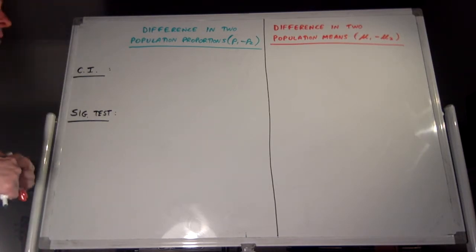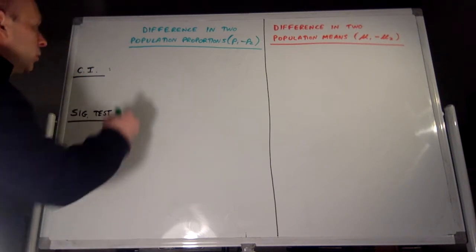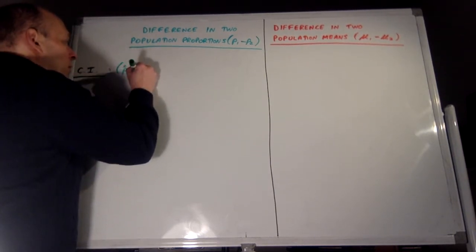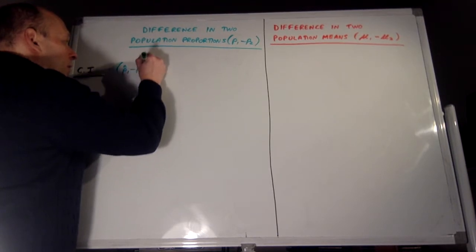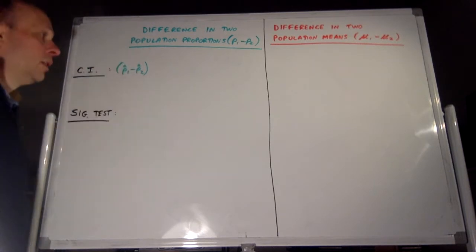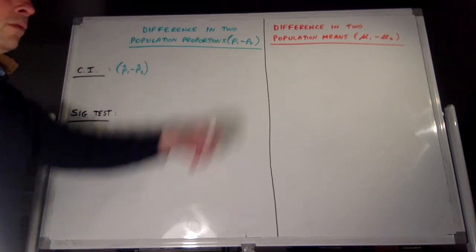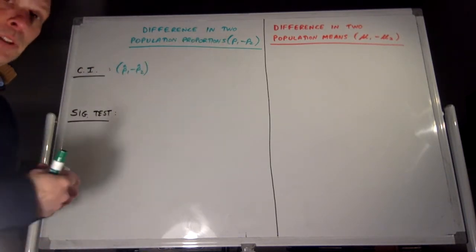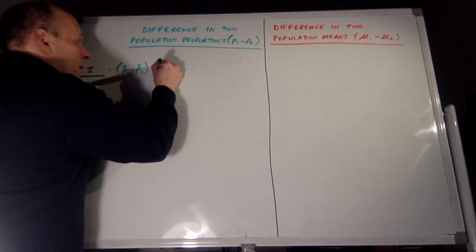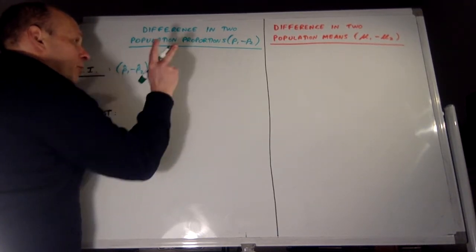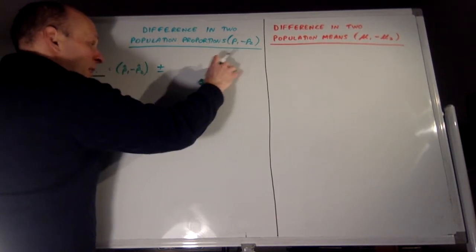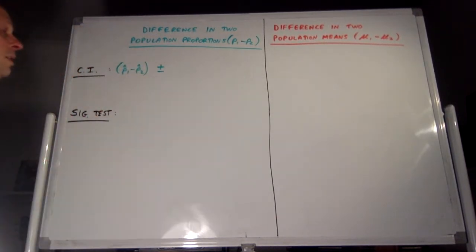The estimate for p1 minus p2 is whatever your p-hat 1 minus p-hat 2 is in your two independent samples. That's your estimate. In hopes of capturing that, we build a net around it with our confidence interval, so we do plus or minus the margin of error, which is made up of two components: the critical value and the standard deviation or standard error of your statistic.